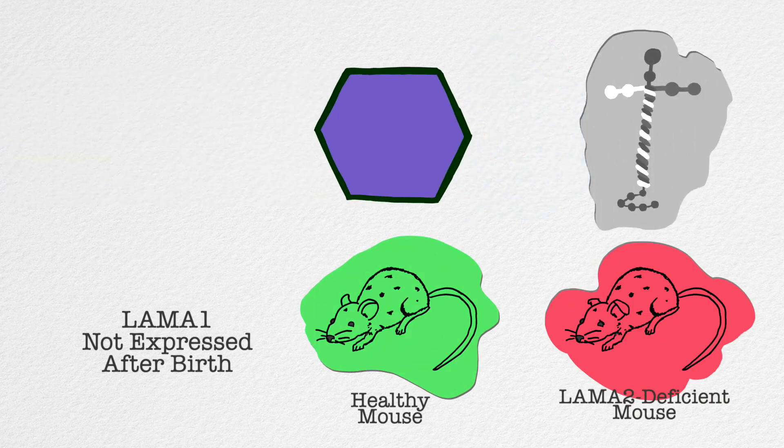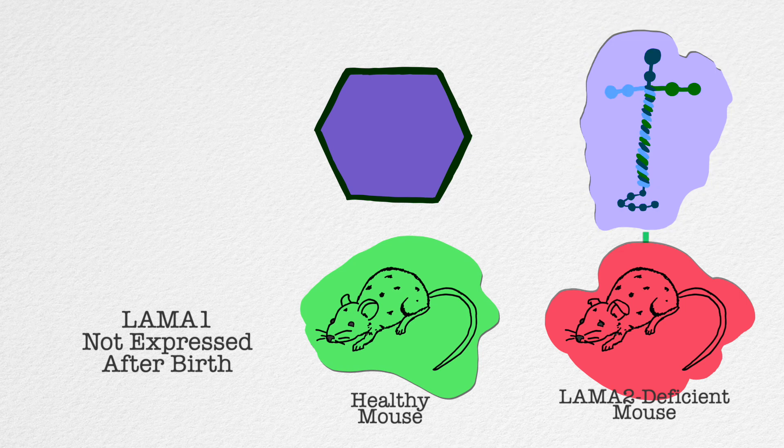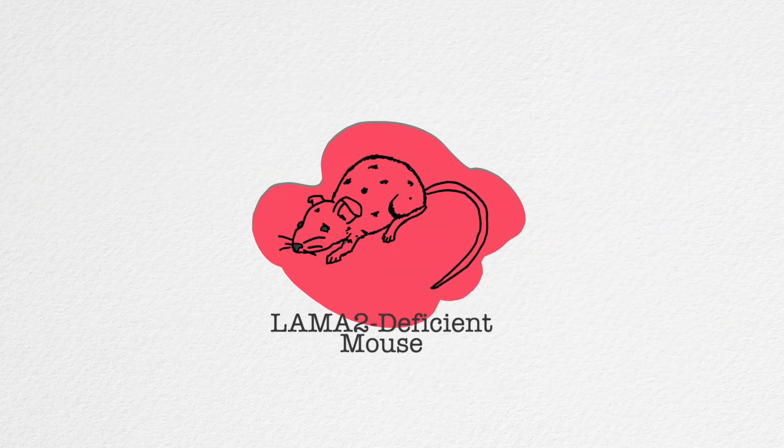Using CRISPR activation, we turned on LAMA1 in mice that lacked LAMA2 to see if we could treat these mice with muscular dystrophy.